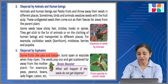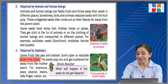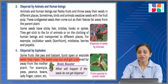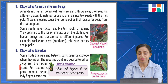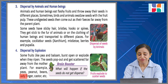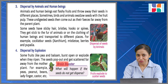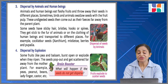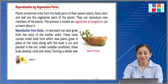Dispersal by explosion: some fruits like pea and balsam burst open or explode when they ripen. The seeds pop out and get scattered far away from the mother plant. For example, peas, peanut, beans, lady finger, and castor. Brain booster: what will happen if seeds do not get dispersed?